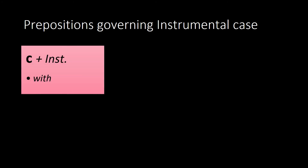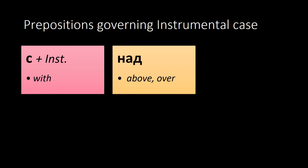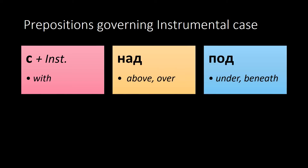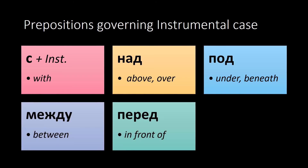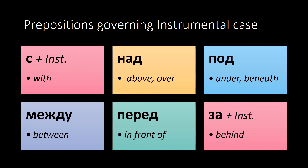С is not the only preposition used with the instrumental case. We also have prepositions that describe the position of an object in space: над — above or over; под — under; между — between; перед — in front of; and за — behind. All of these are used with the instrumental case.